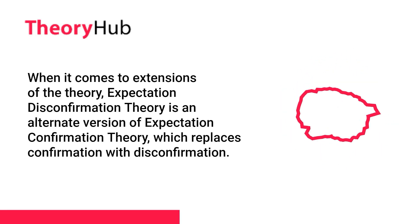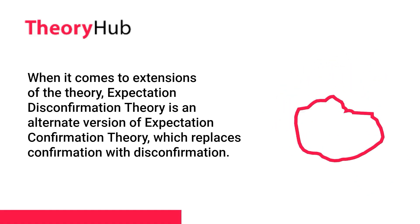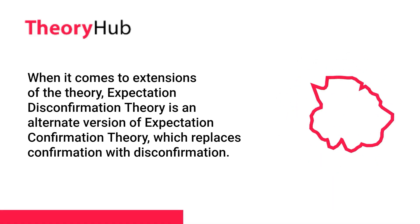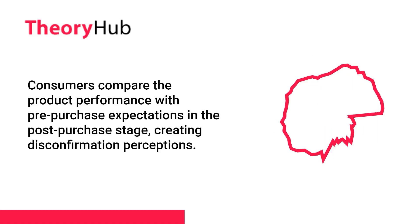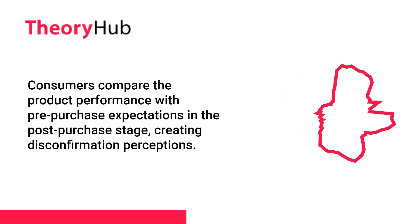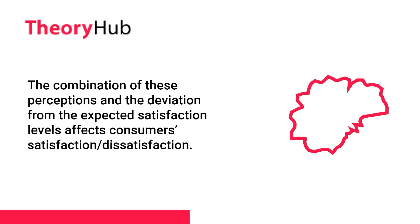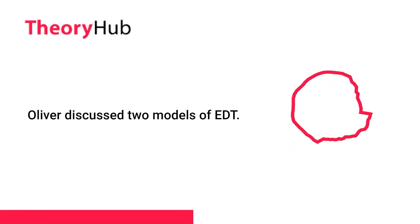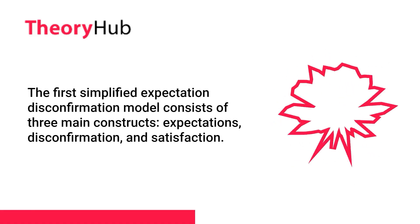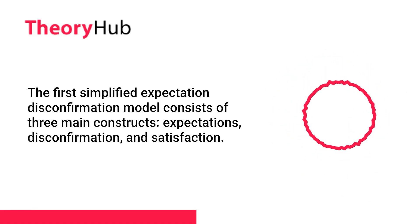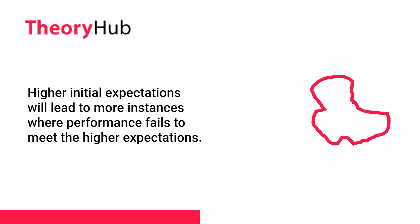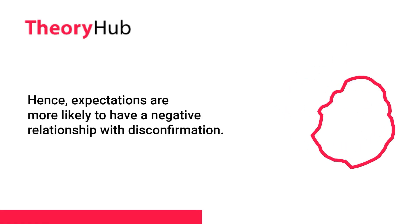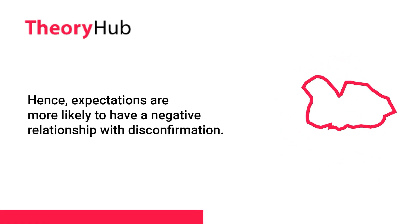Expectation Disconfirmation Theory (EDT) is an alternate version of Expectation Confirmation Theory, which replaces confirmation with disconfirmation. Consumers compare product performance with pre-purchase expectations in the post-purchase stage, creating disconfirmation perceptions. Oliver discussed two models of EDT. The first, the simplified expectation disconfirmation model, consists of three main constructs: expectations, disconfirmation, and satisfaction. Higher initial expectations will lead to more instances where performance fails to meet those expectations; hence expectations are more likely to have a negative relationship with disconfirmation.